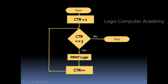Here is a flowchart which shows us how the loop is executed. Let's take a counter and initialize it with the value of 1. Next, we check whether the counter is less than or equal to 3. If it is — since it is 1 now — it'll print the word Logix. Now we increment the counter by 1 so that it goes back to checking whether the counter is less than or equal to 3.